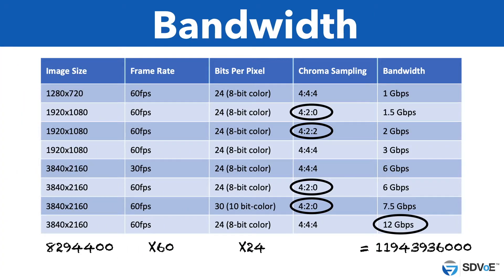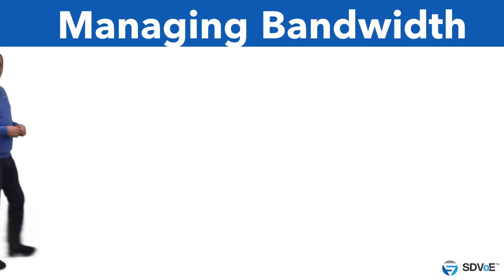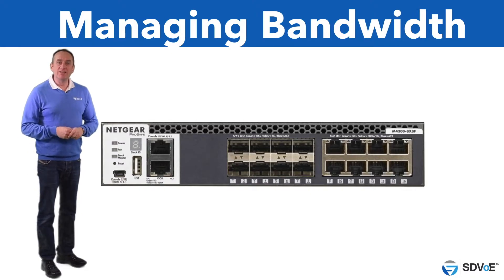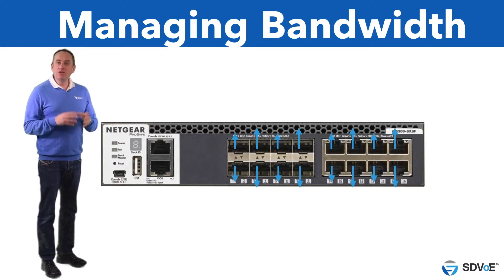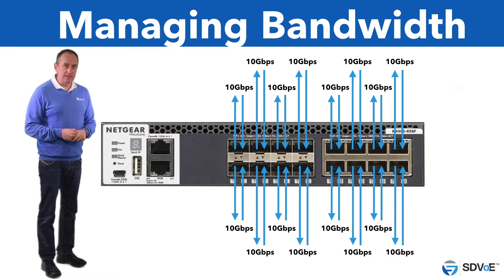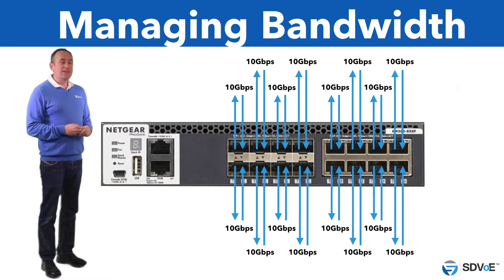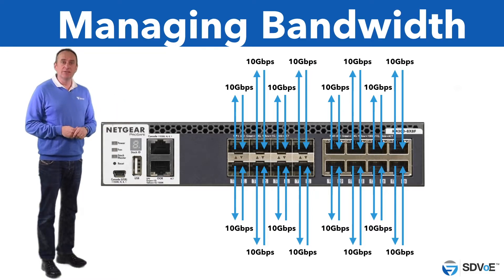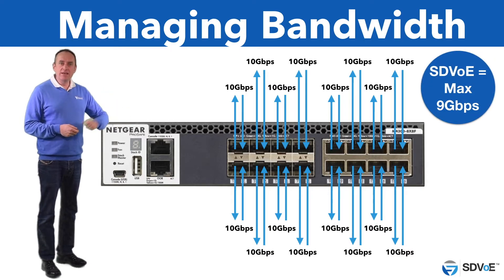Let's get back to bandwidth. Now we know how to calculate the bandwidth of a given video stream, how can we put this information to good use? Managing bandwidth across a single switch is easy. Switches are designed to be non-blocking — in other words, they're designed to allow every port to operate at maximum bandwidth simultaneously. So the only consideration is whether any single stream overflows a single link. SDVoE is designed to always fit within 9 gigabits, so there's never any overflow on a single switch.